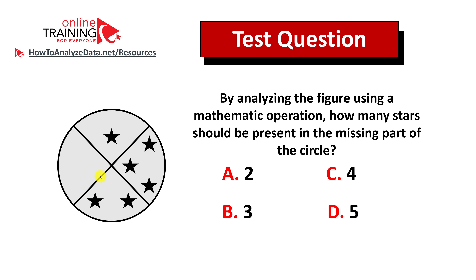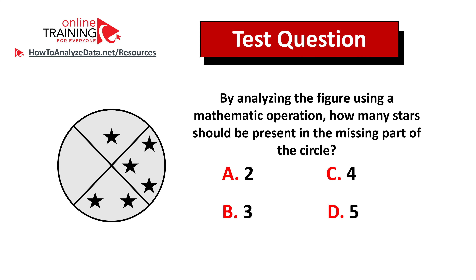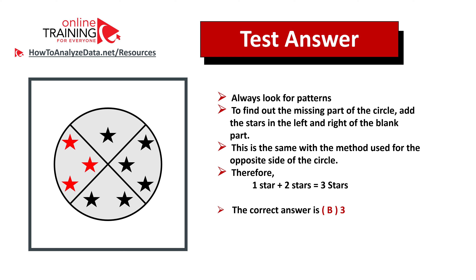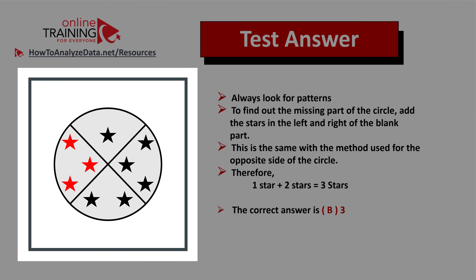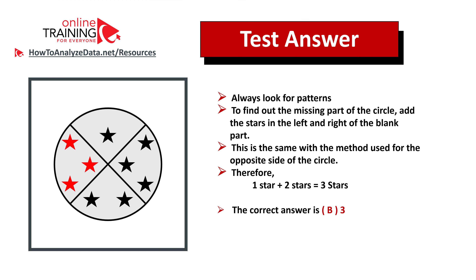Did you figure out the answer? Always look for patterns — here the pattern is symmetricity. If you draw a line in the middle of the circle from top to bottom, you need to come up with an answer that would be symmetrical. There are multiple ways to solve this. Using addition: take the stars from the left of the blank part and add the stars from the right — one plus two equals three. You can also use subtraction. If you figure out the subtraction approach, post it in the comment section.